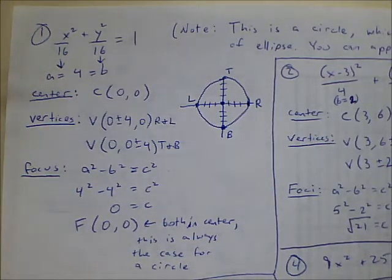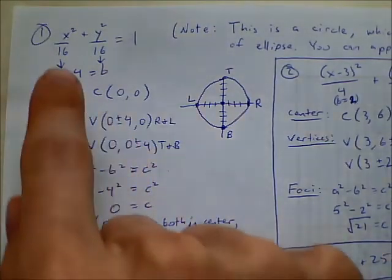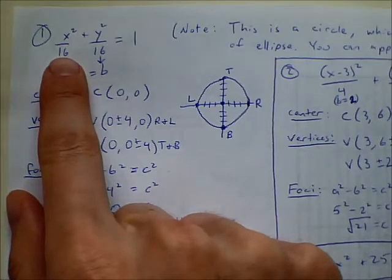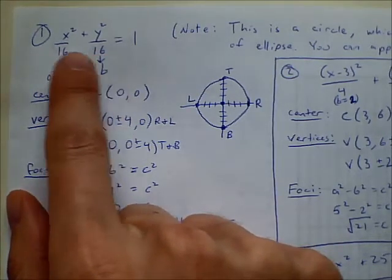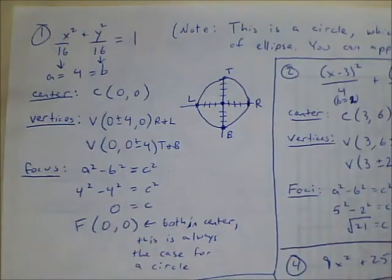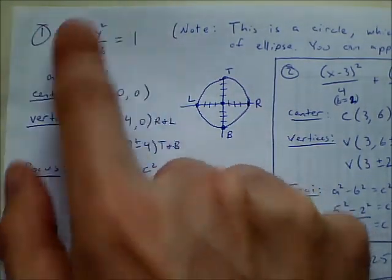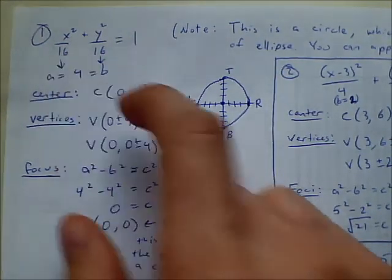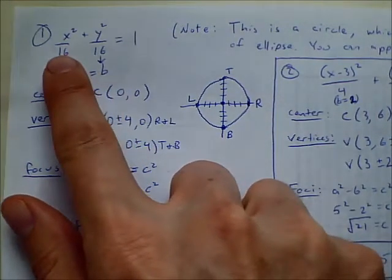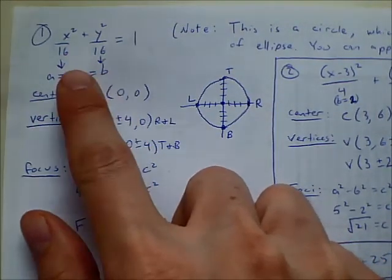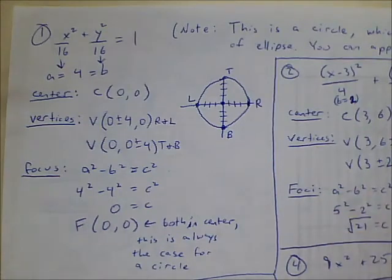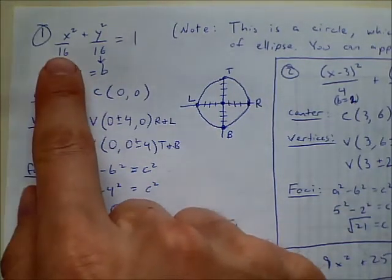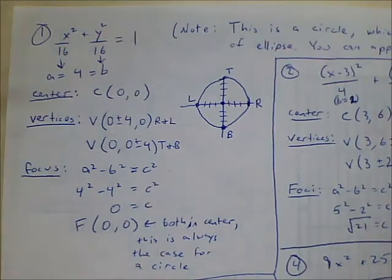Let's look at number one. The first thing you might notice is you have the same number on the bottom of both fractions. So essentially what we have here is already in general form for an ellipse, but it's actually a circle. If we have the same value for A and for B, then rather than having a stretched-out ellipse, we have the same stretch in the x and the y direction — therefore it's a circle.